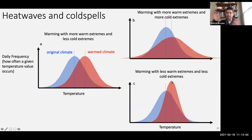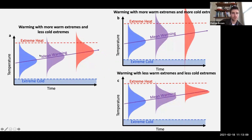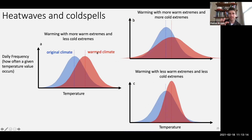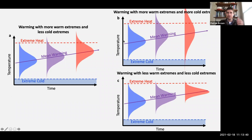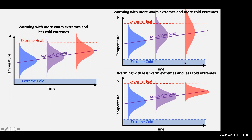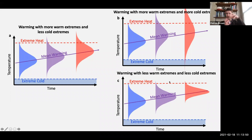This is just another way of looking at the exact same thing. Instead of saying 'original climate' and 'warmed climate' and plotting them on top of each other, this plots those things over time — temperature on the Y axis, time on the X axis. One case shows the distribution moving up over time, giving less extreme cold and more extreme heat. Another shows it flattening out — warming in the mean, but getting wider, so more extreme cold over time. And the third shows it getting narrower — warming in the average, but less extreme heat and way less extreme cold.